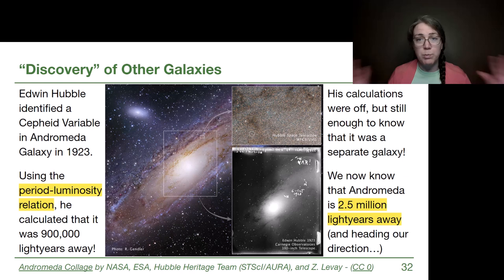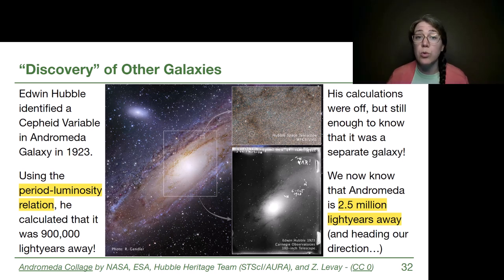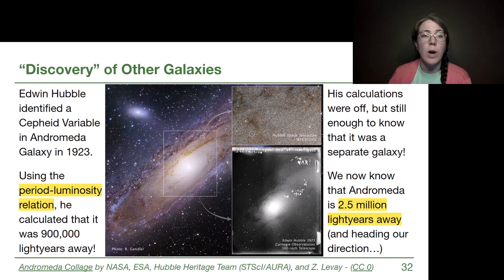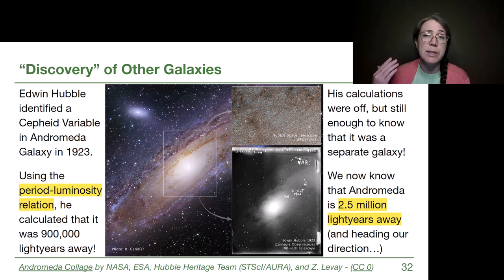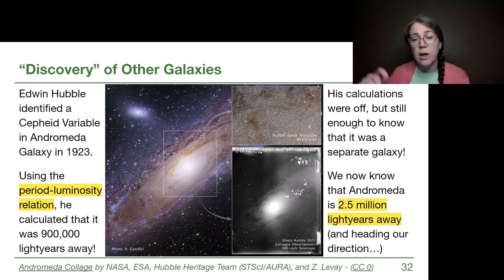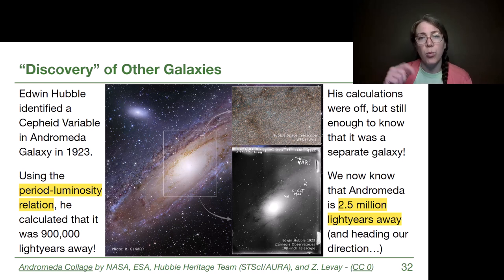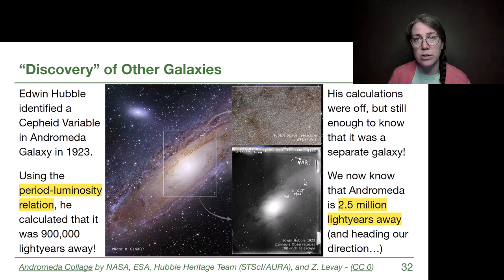Although this great debate happened in 1920 with no one having clear answers, it was only three more years before definitive proof came in to rule out the idea that the spiral nebulae were part of our own galaxy. Edwin Hubble, for whom the Hubble Space Telescope is named, identified a Cepheid variable in the Andromeda galaxy. He had been studying nova events — the end result of a white dwarf in a binary system — identifying several novae in that region, and realized one of them was actually a Cepheid variable with the characteristic periods of brightening and dimming.